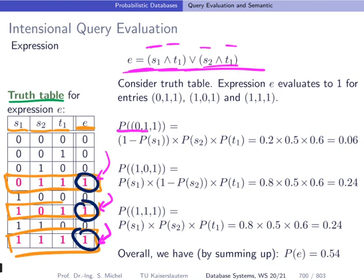And then we can compute the probability of the assignment 0, 1, 1, which would be the first one here, which is, because of the 0, we take 1 minus probability of S1 times probability of S2 times probability of T1, which is 0.06. And we do this for all of these assignments that produce a 1. And then we sum up and have 0.54. This is also what we got in our brute force possible world enumeration.